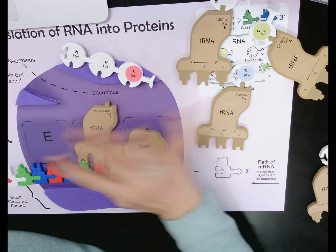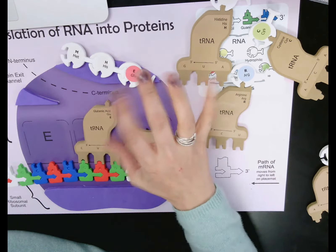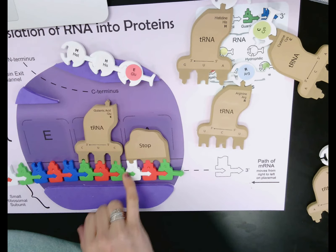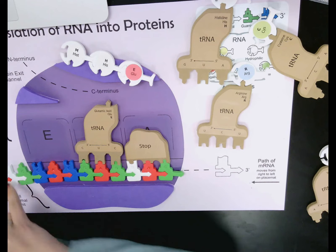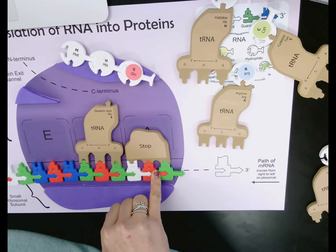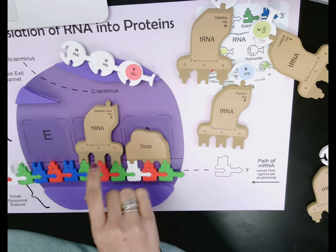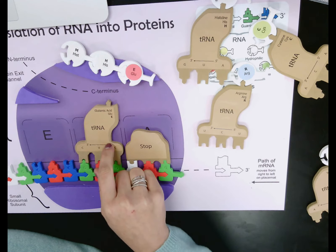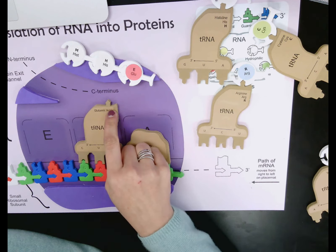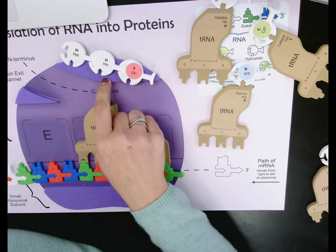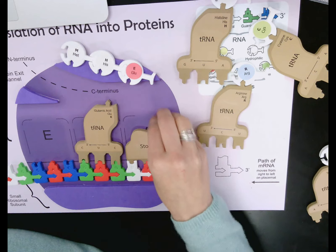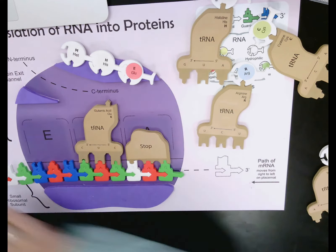Just to recap: in translation, the mRNA molecule comes to the ribosome. Each codon is a three-nucleotide sequence. The anticodon on the tRNA brings an amino acid, and the rRNA — the ribosome — assembles those amino acids until it reaches a stop codon.